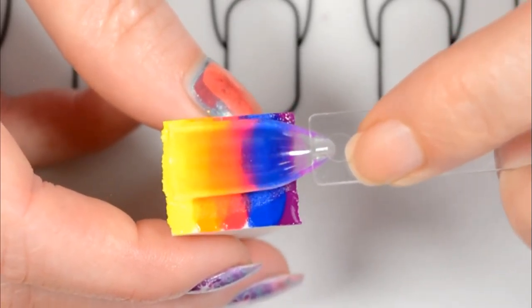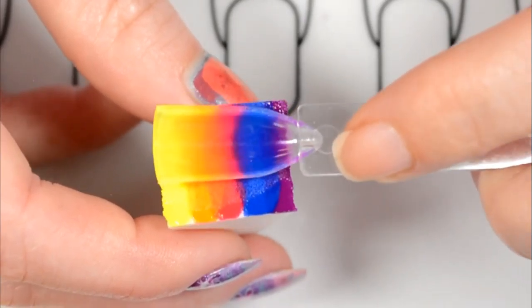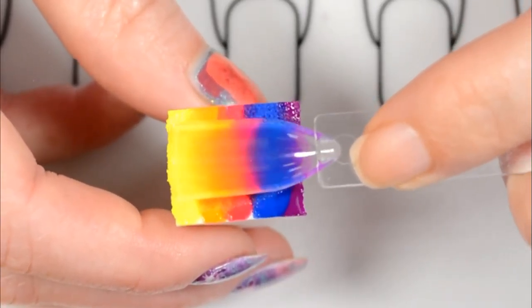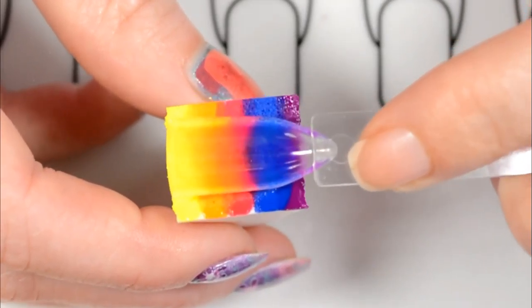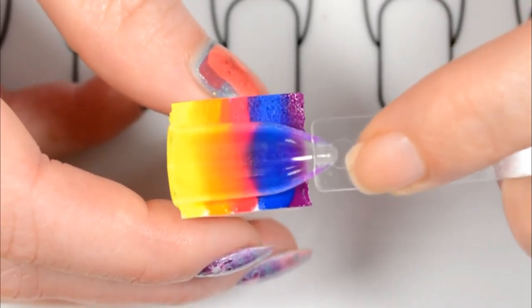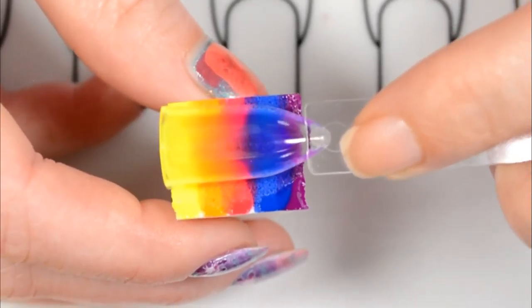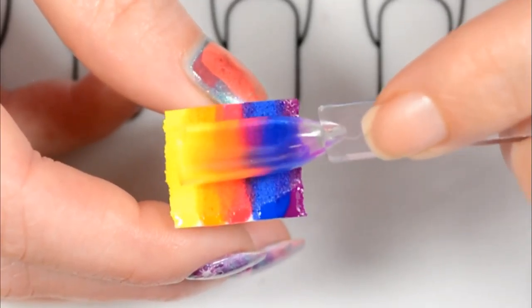Start moving that sponge in small circular motions. This is the dab dab dab that so many people refer to. And as you are moving them around in circular motions, you are really starting to blend those colors together and making them fade seamlessly into each other.